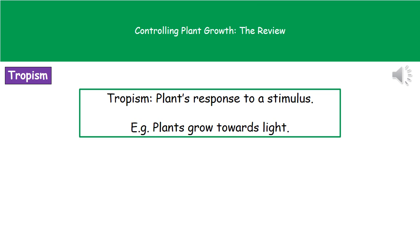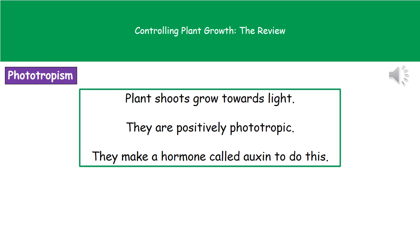The word tropism refers to the plant's response to a stimulus. For example, the fact that plants grow towards the light would be an example of a tropism.